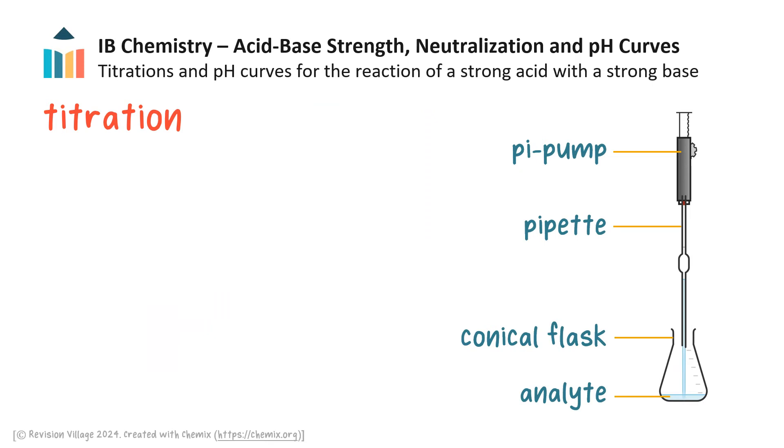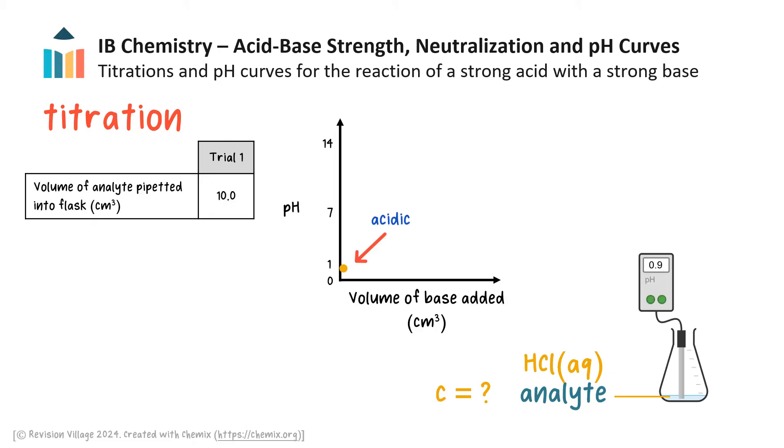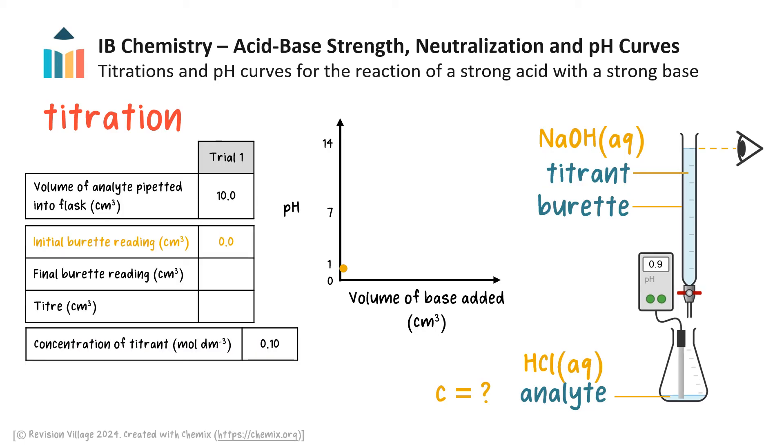An accurately measured volume of the analyte, that is, the solution whose acid or base concentration is being determined, is pipetted into a conical flask with a few drops of indicator. Let's assume the analyte is the strong acid hydrochloric acid. We can record the acid volume. Its initial pH can be measured using a probe from a pH meter, and the pH value is plotted on the y-axis of a pH curve. For a strong acid analyte, such as hydrochloric acid, the initial pH is low. Since the analyte is an acid, in this example, then the burette is filled with a base, in this case sodium hydroxide, of accurately known concentration. The solution in the burette is called the titrant. We record the titrant concentration. And we record the initial burette reading. Let's assume it is at 0.0 milliliters or centimeters cubed, but it could be at any other value.